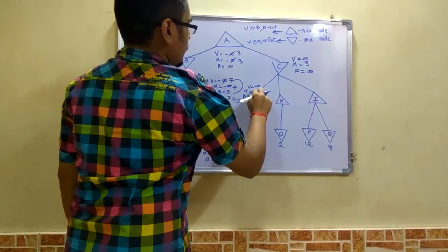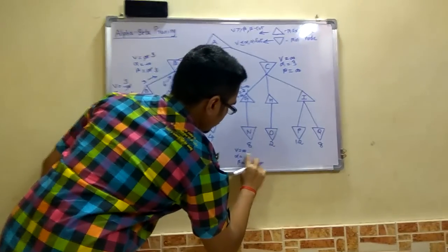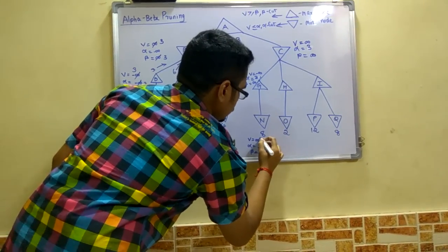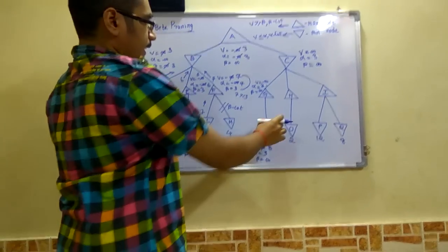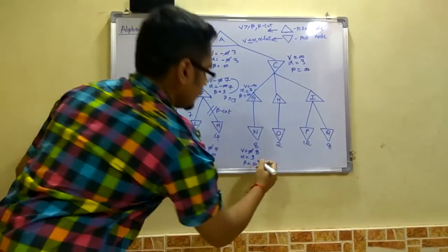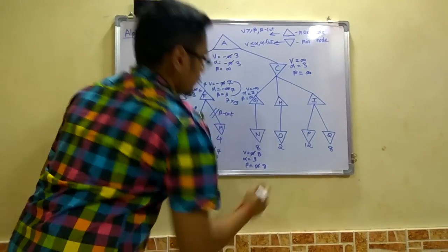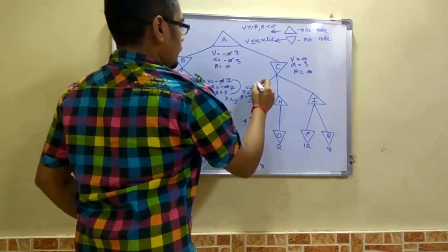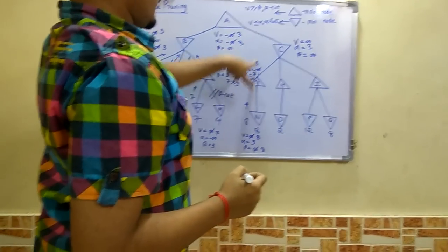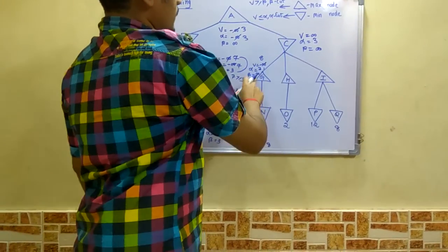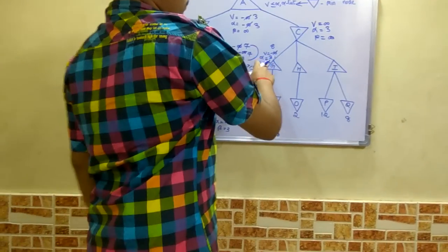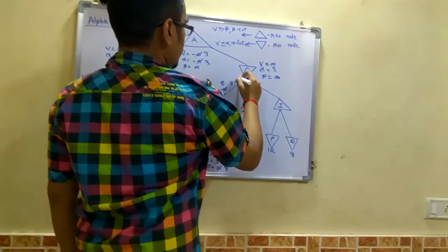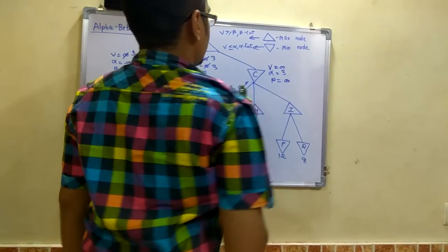We update the value of V to 8 here. At the minimizer node, the beta value gets updated to 8. The value 8 moves up, and we check whether V is less than or equal to alpha. This condition is true, so we do not update. The value of 8 is then moved up to node C.